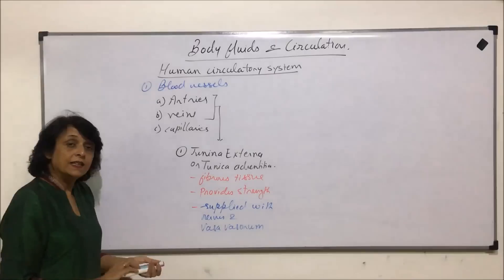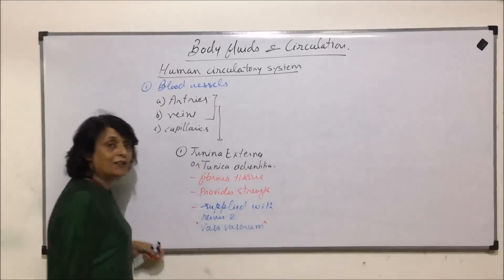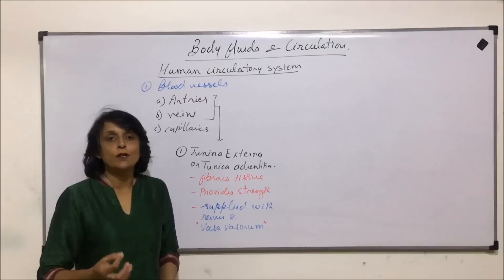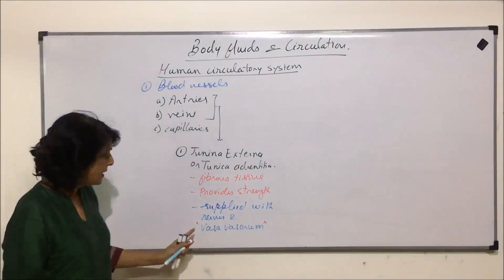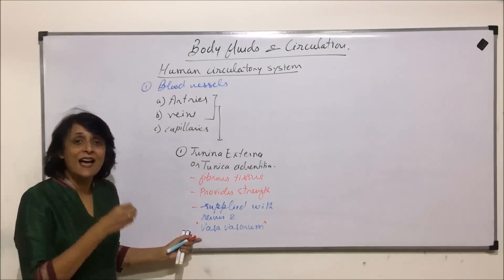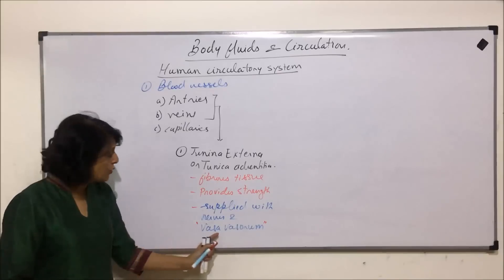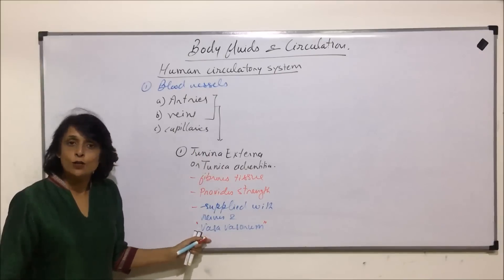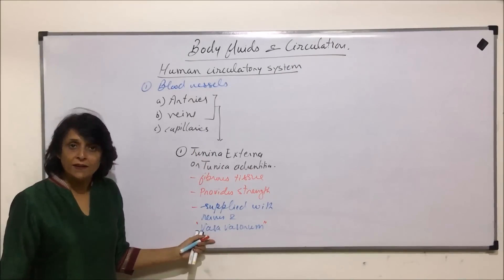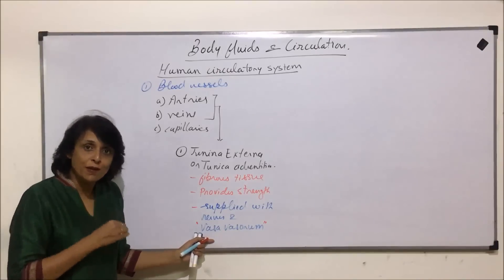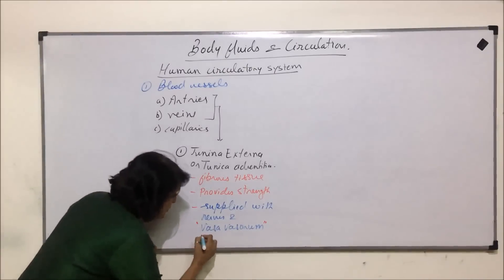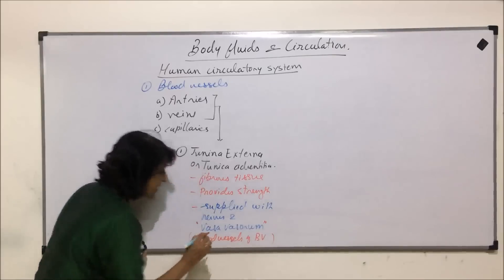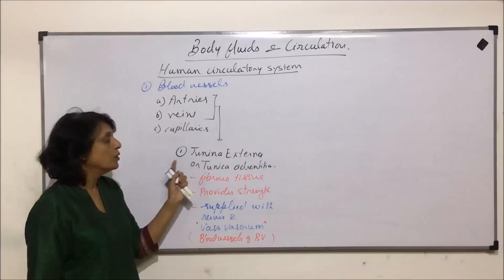Vasa vasorum are actually blood vessels of blood vessels. Blood vessels have a function to supply blood to a particular part and bring blood back from that part to the heart. But which blood vessel supplies blood to the blood vessel itself? Those blood vessels are known as vasa vasorum. Arteries, veins, and capillaries also need oxygen and nutritive material, so the blood vessels bringing this oxygen to the blood vessel are called vasa vasorum — blood vessels of blood vessels. They are supplying blood to the tunica externa.